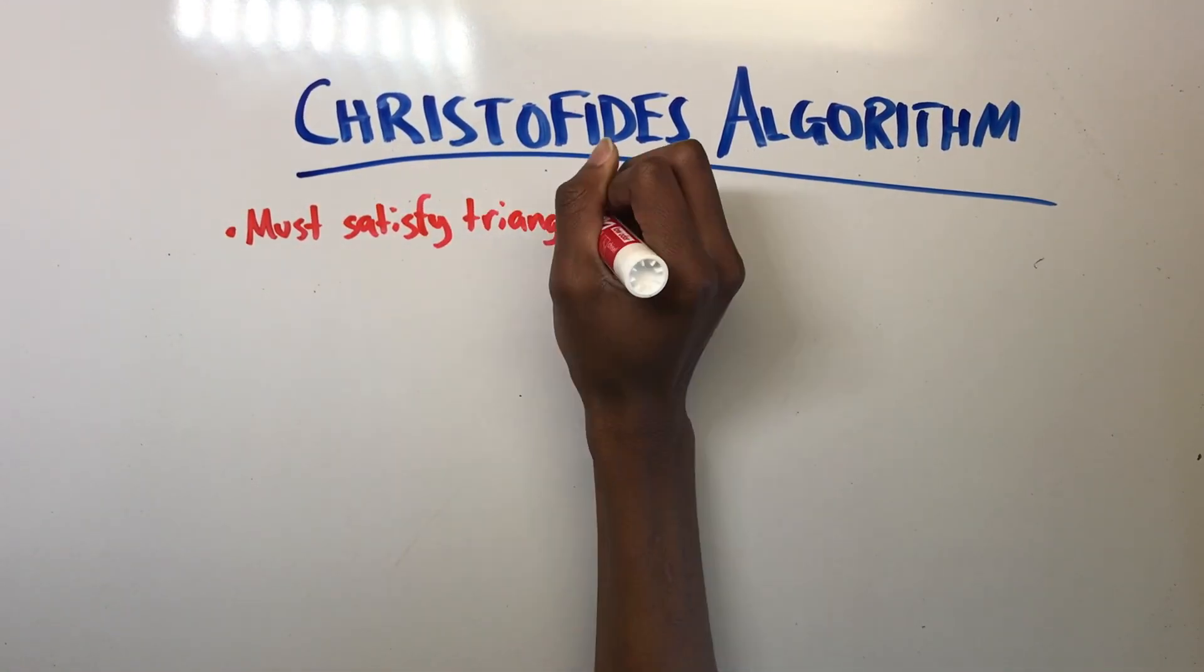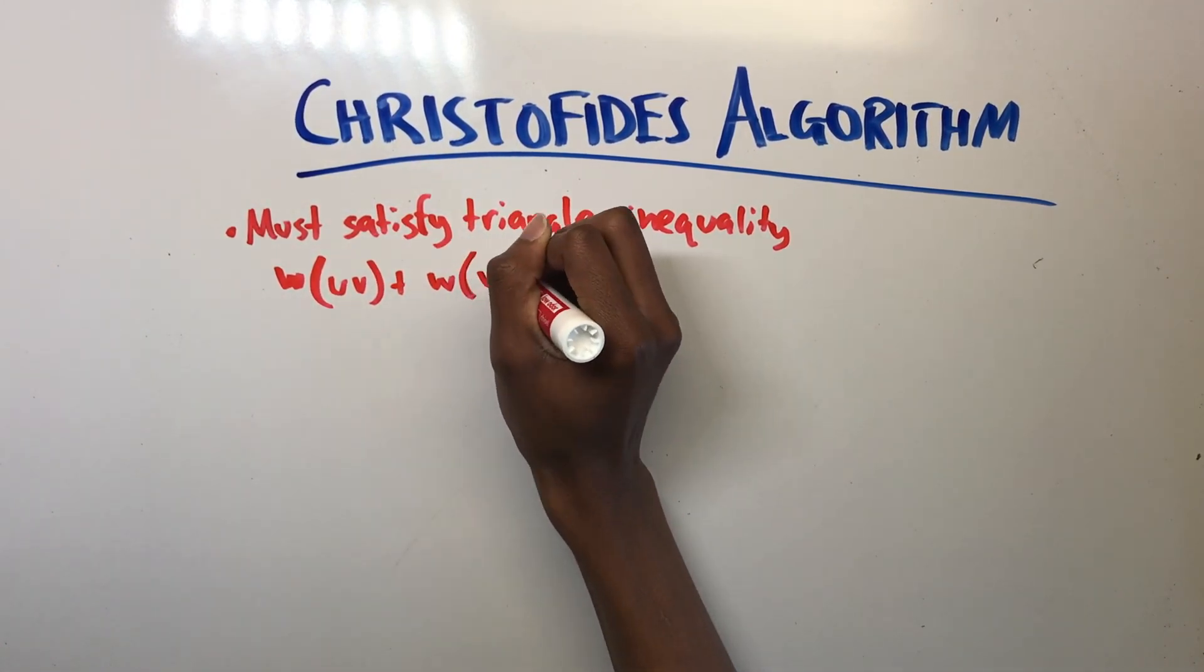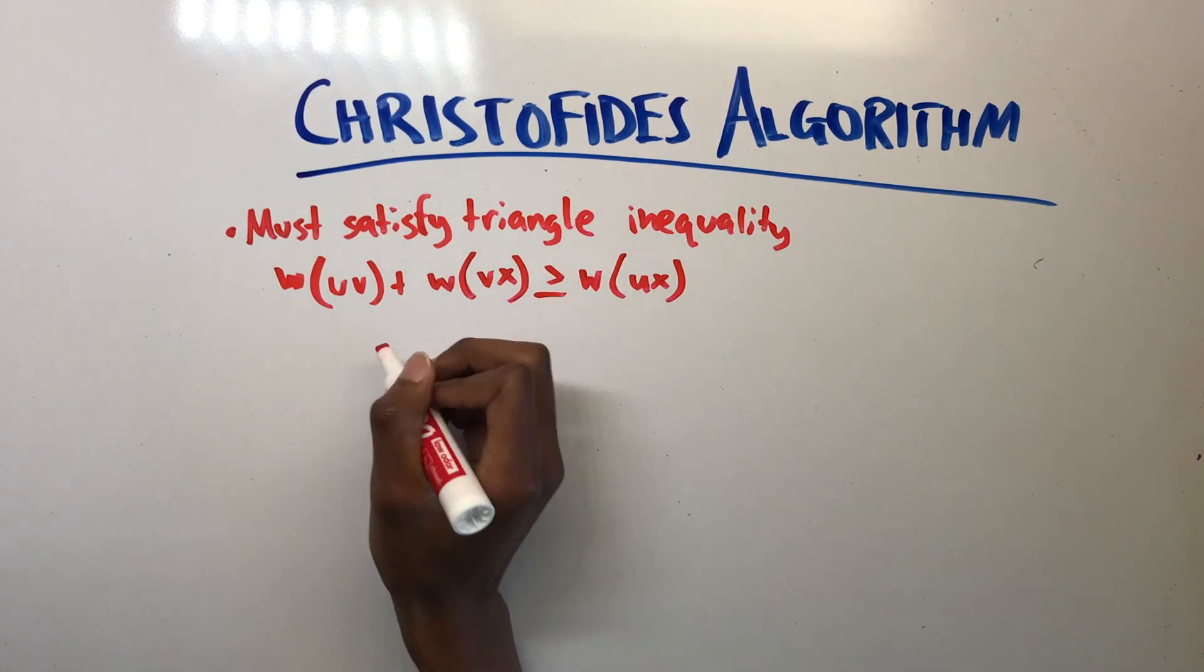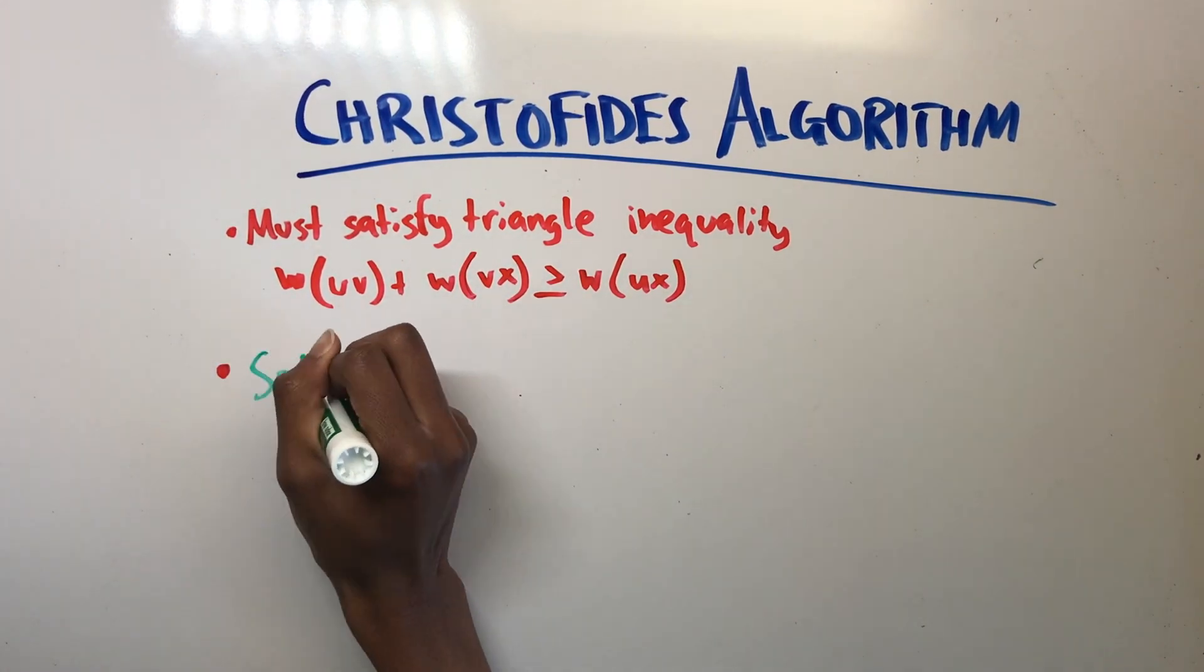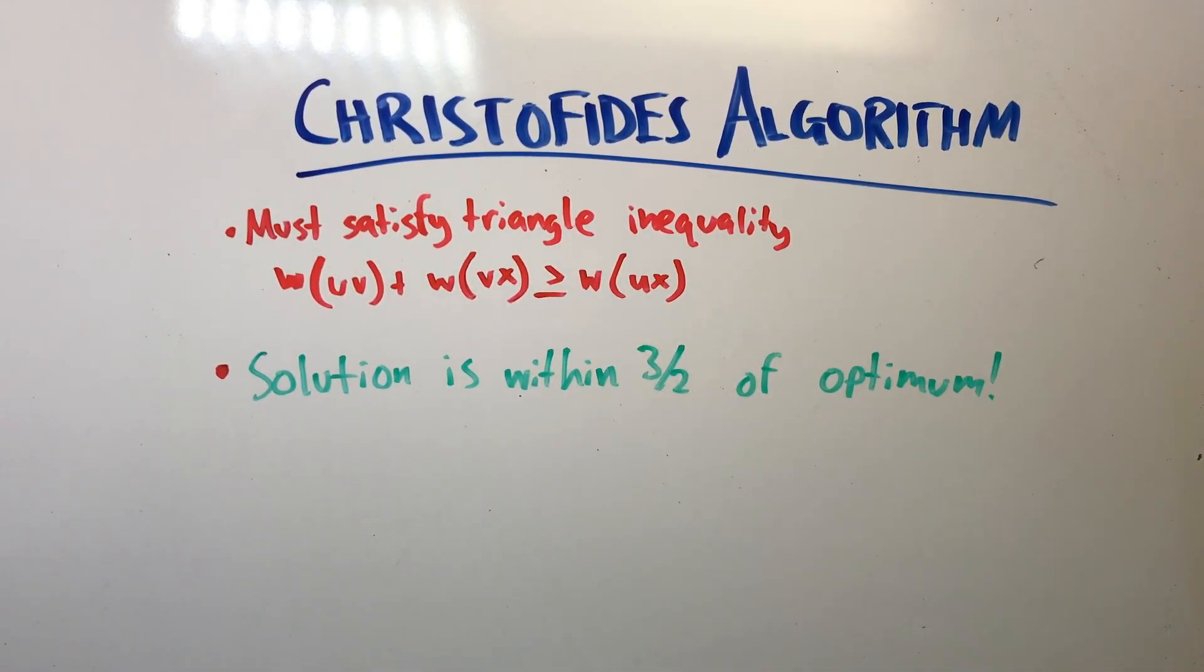The only downside to this algorithm is that for it to work, the graph must satisfy the triangle inequality, meaning the sum of two edges must be greater than or equal to the weight of the third edge that is connected by the two. It is proven that the cost of the solution produced by the Christofides algorithm is within 3/2 of the optimal.